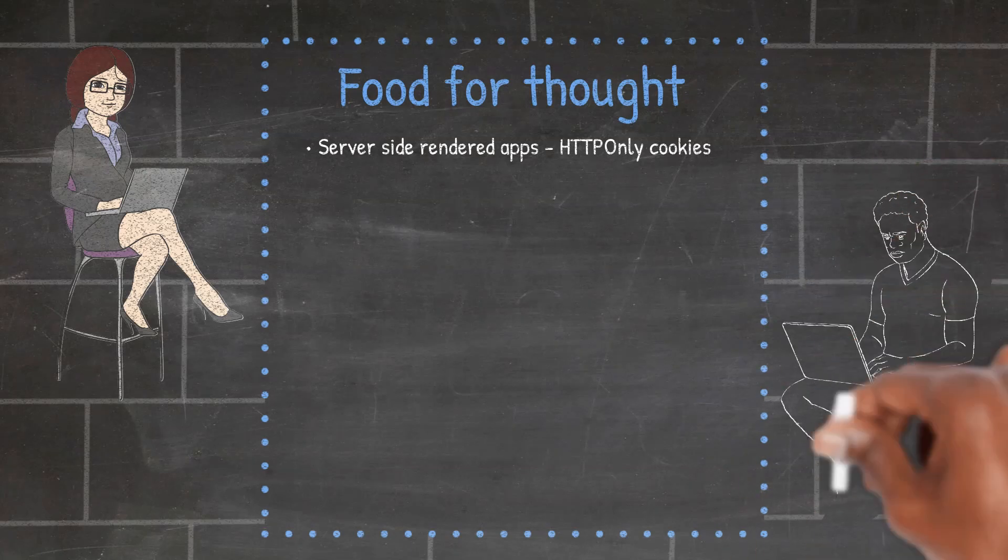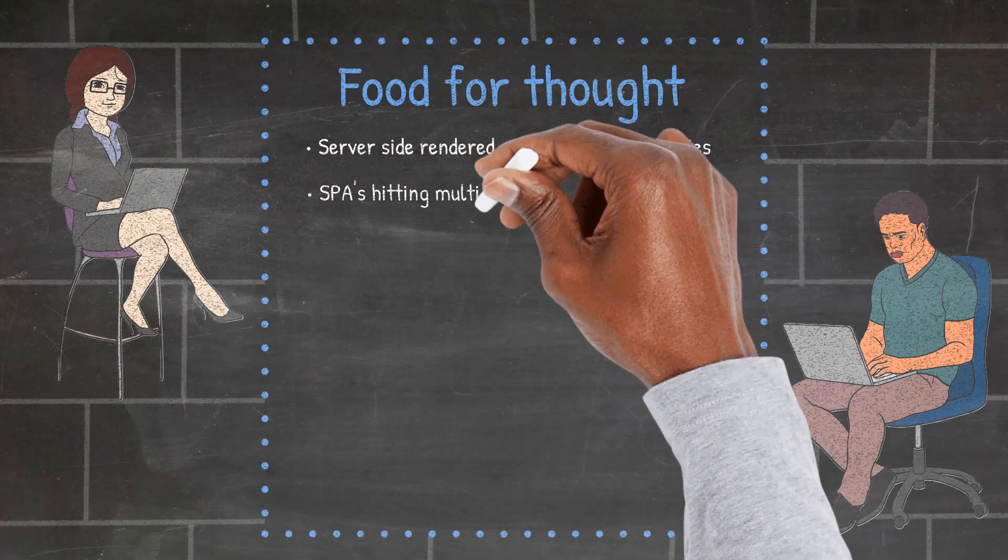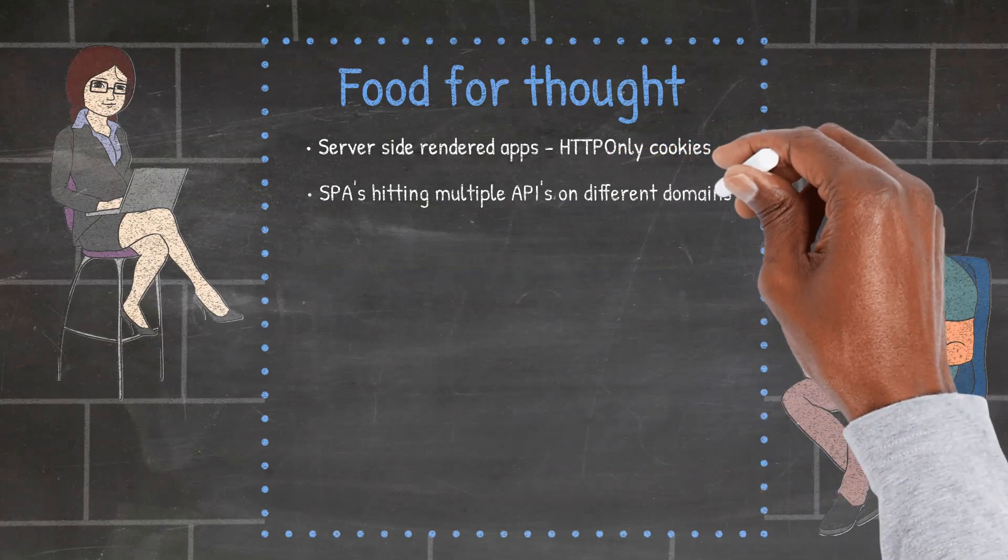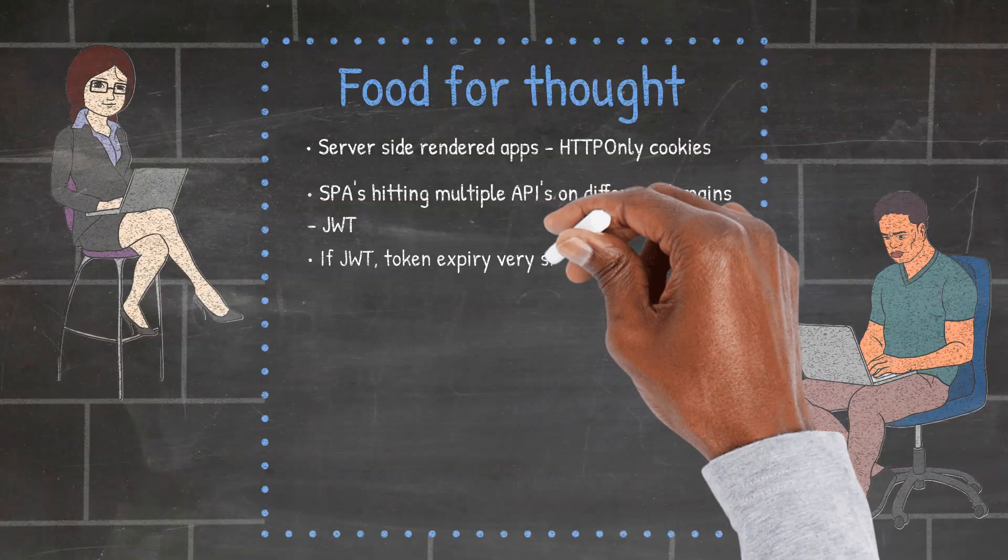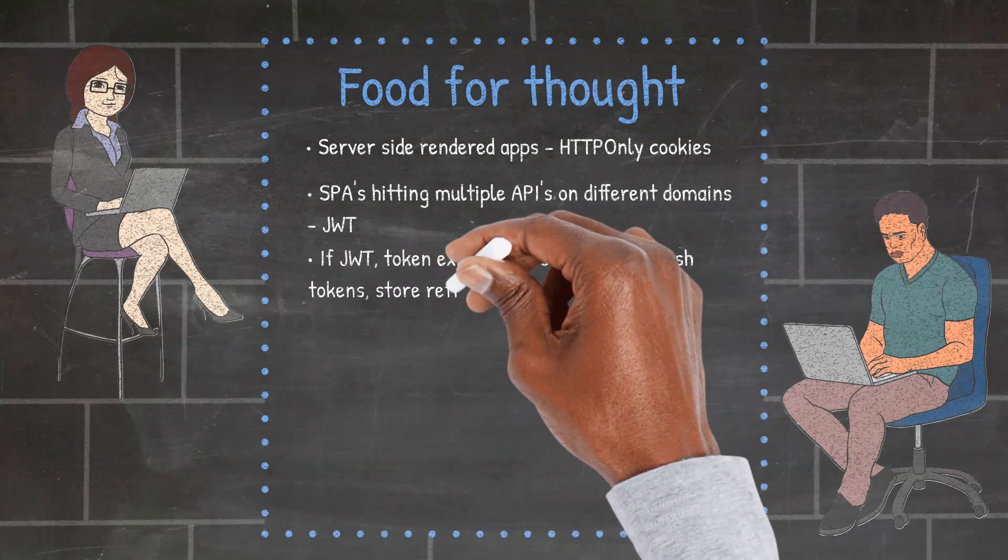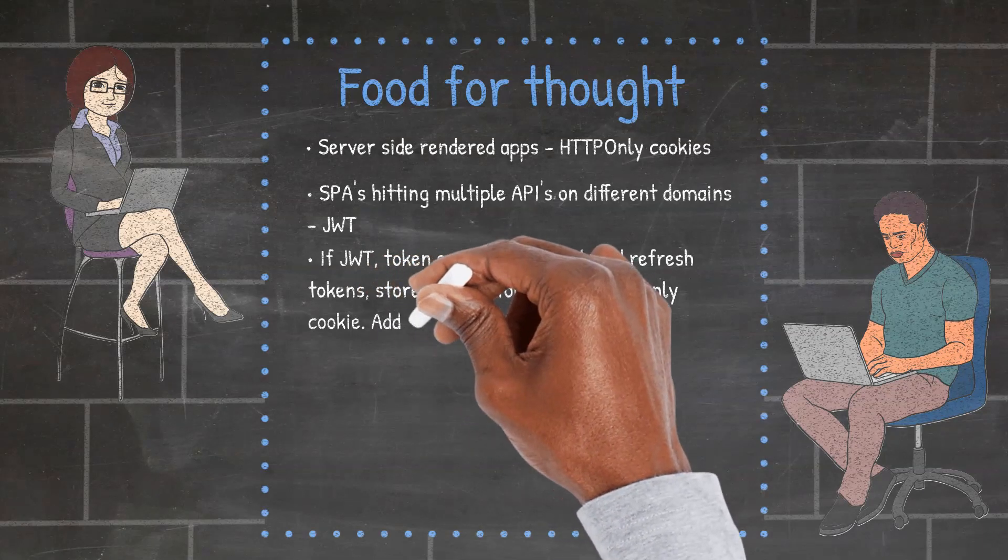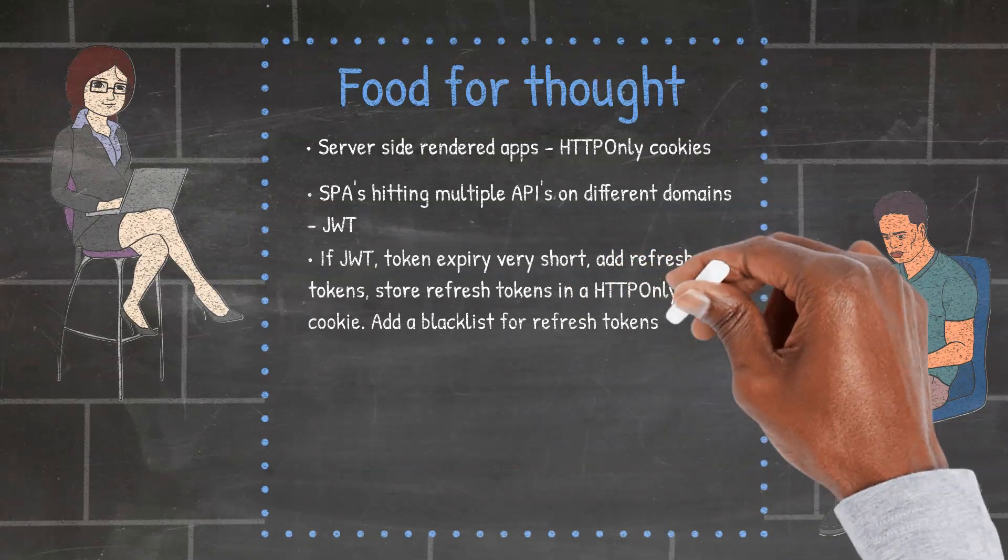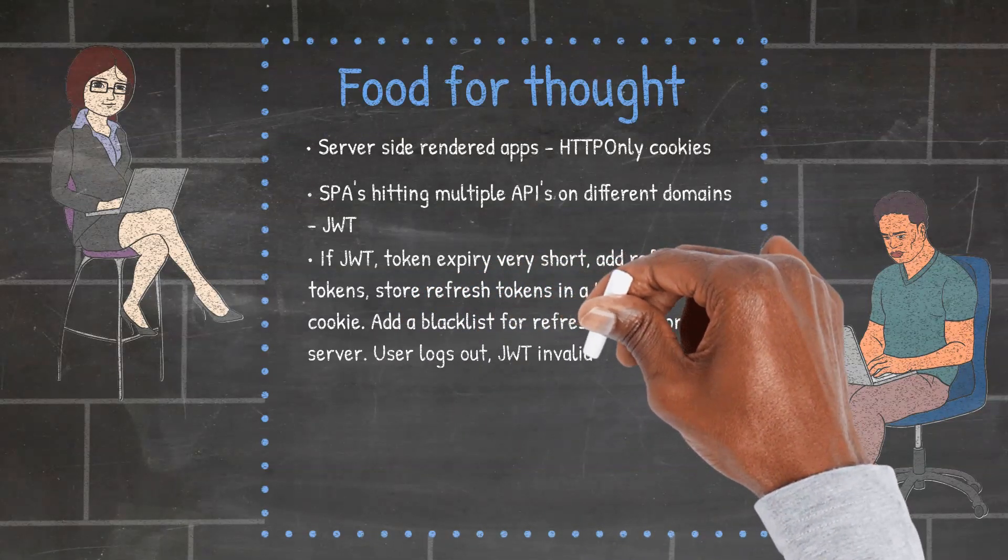If I am building a single page application in React that will be getting data from more than one API or even third-party APIs on different domains that I don't have control over and can't send cookies to, then I use token-based authentication with JWTs. If I have to use JWTs for my application, I store very minimal user information on the token. I also set a very short expiry time, maximum 10 minutes, then also implement refresh tokens. The refresh tokens generate new access tokens automatically when the access tokens expire if the user is still connected and logged in. To further tighten things up, I also blacklist the refresh tokens on the authorization server and on the client, store the refresh tokens in HTTP-only cookies with secure and same-site flags. Furthermore, I also ensure that when the user logs out or becomes disconnected, their last issued JWT will become invalid in only 10 minutes, at which point it becomes completely useless to an attacker.